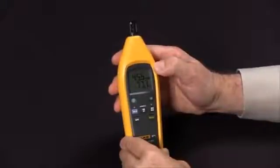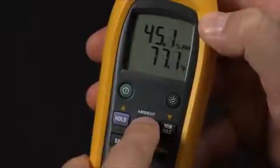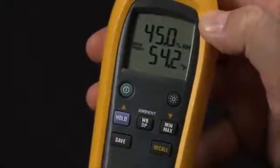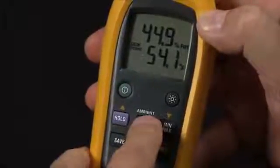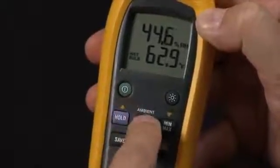Now your meter will measure in ambient mode. To access your dew point measurement, press the ambient button one time. To get to your wet bulb temperature, press it once more. To return back to ambient temperature, just press the button one more time.